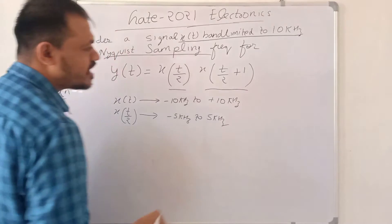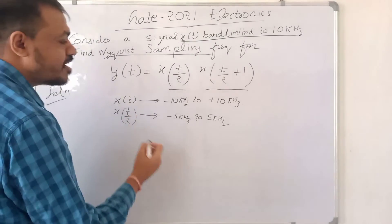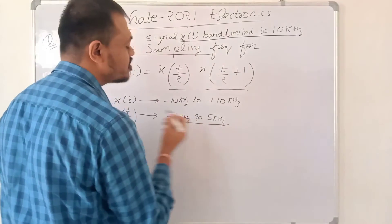And this plus 1 term does not have any impact on the frequency. So X(t/2) + 1 will also exist from minus 5 kHz to 5 kHz only.